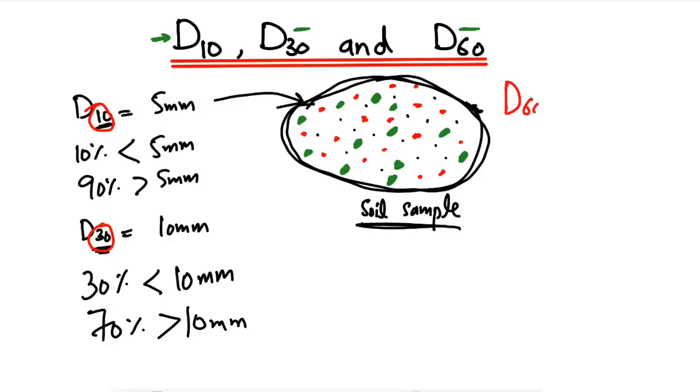Now how do we define D60? For example, the D60 for this soil sample is 12 millimeters. We will see that 60 percent - keep this in mind - 60 percent of the particle sizes.